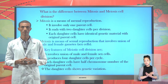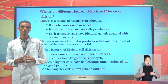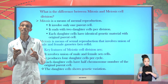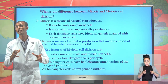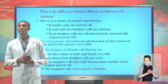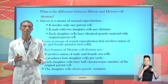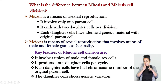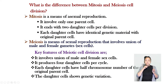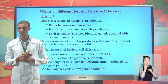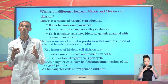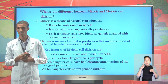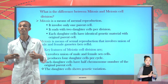All organisms divide to ensure the continuity of the species or for regeneration. This can be carried out through mitotic and meiotic cell division. Mitosis is a means of asexual reproduction that mostly takes place in unicellular organisms, but also takes place in multicellular or eukaryotic organisms during cell growth and differentiation.